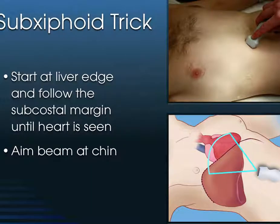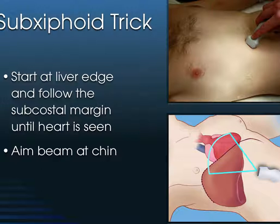Whenever you look at the heart, I think it's helpful to look at it in multiple windows. The first window we think about is a sub-xiphoid view. What you're going to do is actually aim the beam towards the chin of the patient. You always think about the heart sort of being on the left side of the screen, but what we're really trying to do is aim the beam towards the patient's chin. In doing so, we still use that liver as our margin.